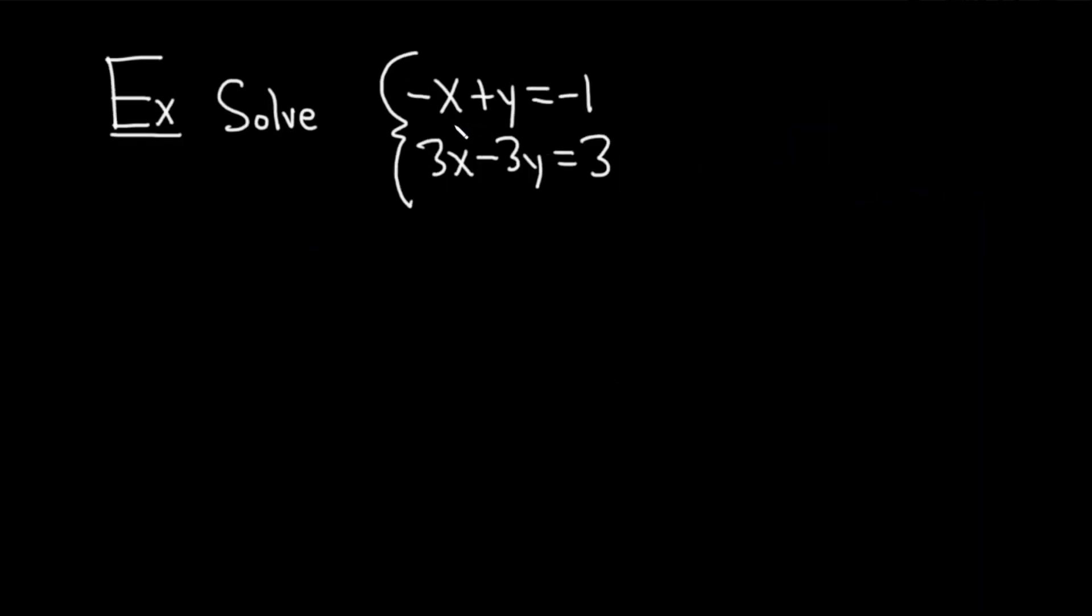Let's go ahead and do one more example. Solve the system: negative x plus y equals negative 1, and 3x minus 3y equals 3. Solution. As before, we'll try to use the elimination method. In this case, it seems that if we multiply that first equation by 3, we'll get negative 3x there for that first term. We can add it to the second one and things will go away. So let's just go ahead and multiply it by 3.